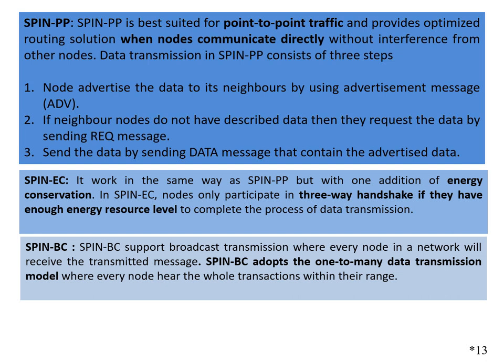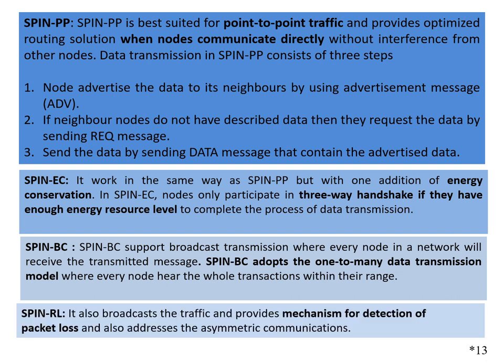SPIN-BC supports broadcast transmission where every node in the network receives the transmitted message. SPIN-BC adopts a one-to-many data transmission model where every node within range hears the whole transmission. SPIN-RL also broadcasts traffic and provides a mechanism for detection of packet loss, and it addresses asymmetric communication. Asymmetric communication means that if a node is in sleep mode, data intended for it is pooled somewhere, and upon awakening, the node inquires about the data and the transmission proceeds. This type of communication in wireless sensor networks is called asymmetric communication.